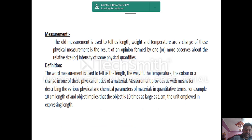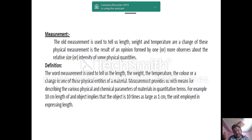What is meant by measurement? The word measurement is used to tell us length, weight, temperature — these are all basic physical parameters. Measurement provides us with means of describing various physical and chemical parameters of material in quantitative form, not qualitative. For example, a 10 centimeter length of an object implies it is 10 times larger than 1 centimeter. The unit employed for expressing length is mm or centimeter.